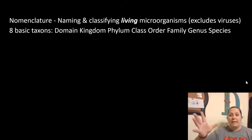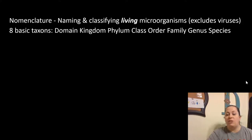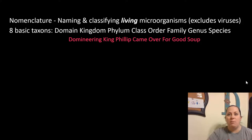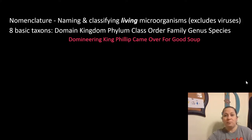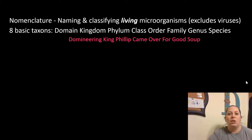The eight taxons start with the broadest, which is the domain, then moves down to kingdom, phylum, class, order, family, genus, and finally species. You need to know these in order. One way is to use a mnemonic sentence where the first letter of each word corresponds to each group. For example: 'Domineering King Philip came over for good soup' — where domineering is domain, king is kingdom, Philip is phylum, and so on. Come up with your own; there are lots of different ones out there.